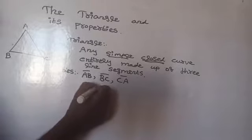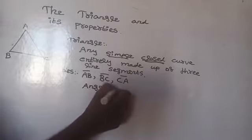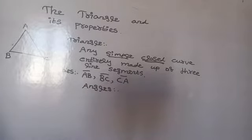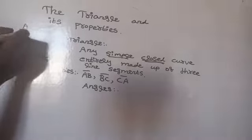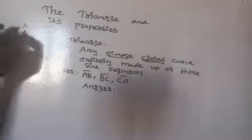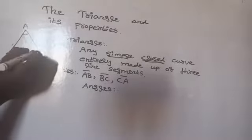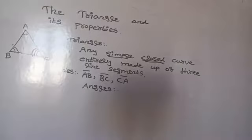How many angles are there? There are 3 angles. They are angle BAC, angle ABC, and angle ACB.